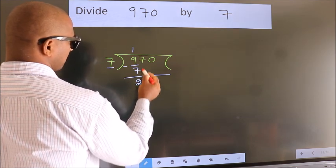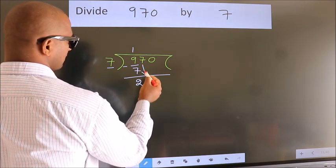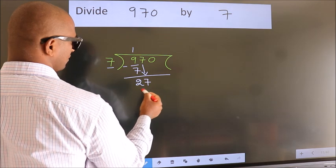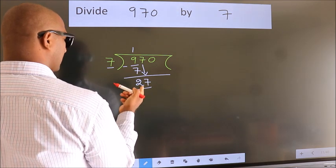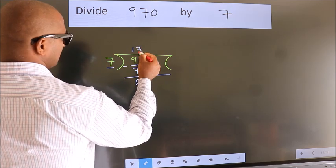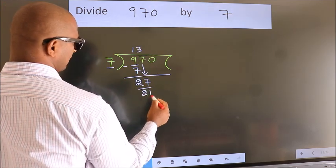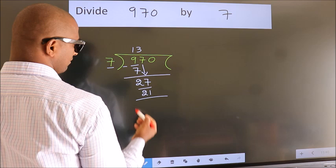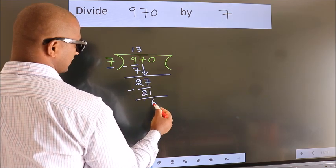After this, bring down the beside number. So, 7 down. So, 27. A number close to 27 in the 7 table is 7 threes, 21. Now we subtract. We get 6.